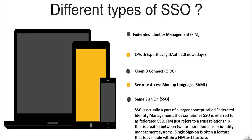Now what are the different types of SSO that we hear every day? These include FIM — Federated Identity Management — OAuth, OpenID Connect, Security Assertion Markup Language (SAML), and same sign-on. SSO is actually part of a larger concept called Federated Identity Management, so sometimes SSO is referred to as Federated SSO. FIM refers to a trusted relationship created between two or more domains or identity management systems. Single sign-on is often a feature available within a FIM architecture. We'll learn about all of these in future videos.